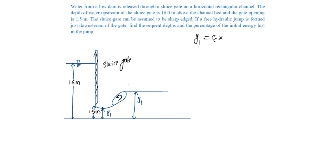y1 will be equal to coefficient of contraction times 1.5. Assume coefficient of contraction as 0.6, which will be equal to 0.6 times 1.5, which is equal to 0.9 meters.